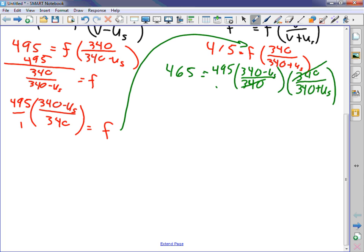340s cancel. One in the denominator, one in the numerator, they're being multiplied. So I get 340s out of there. That's nice. So working another line down here, that's going to give me 465 over 495 equals 340 minus u sub s over 340 plus u sub s.